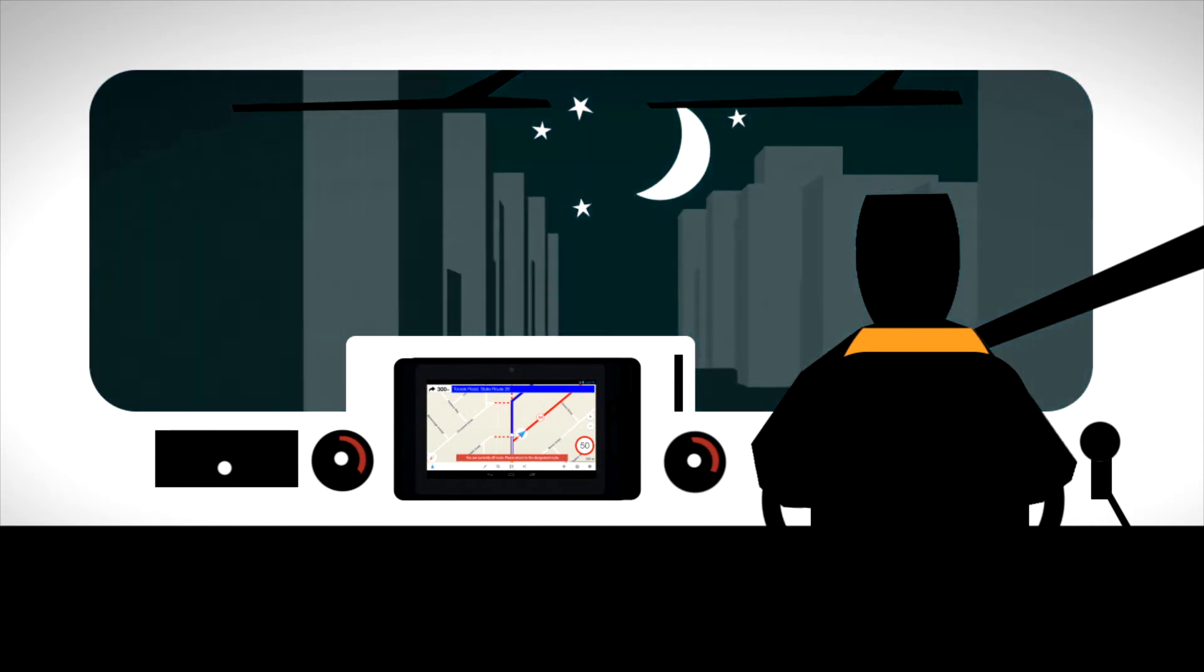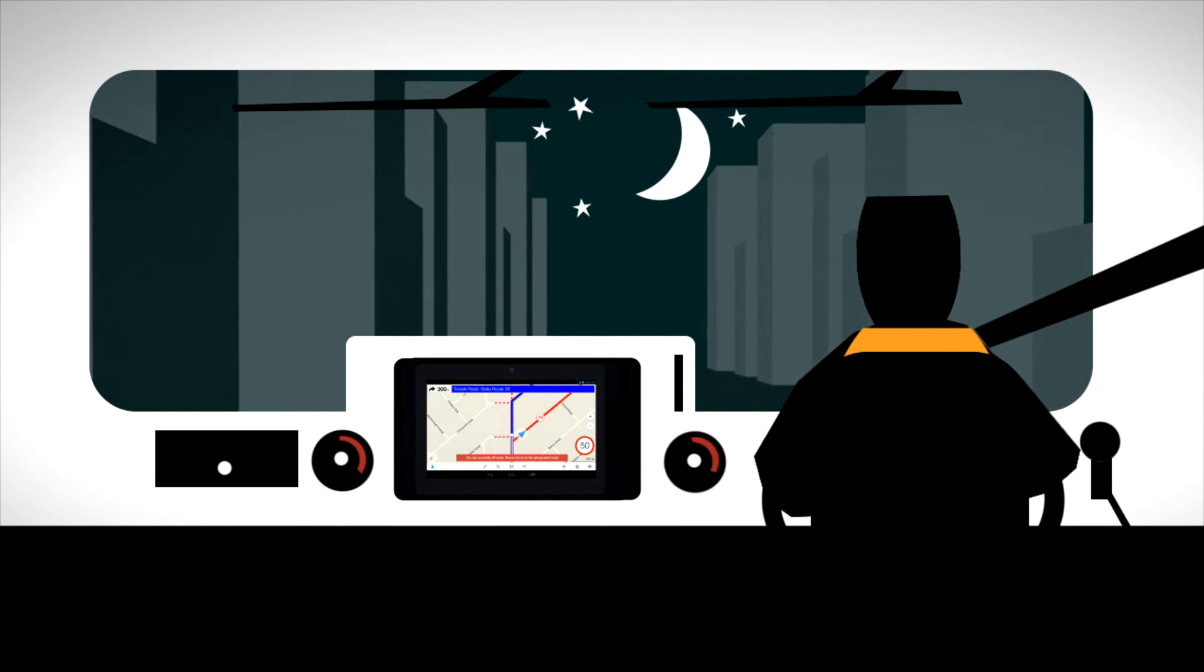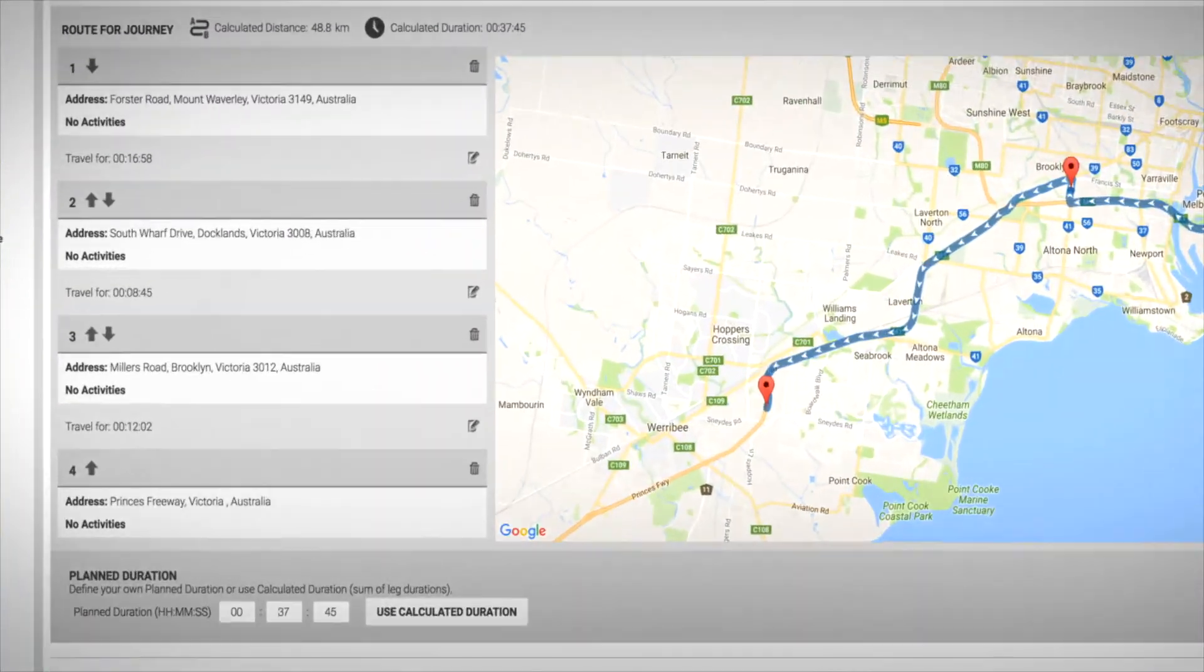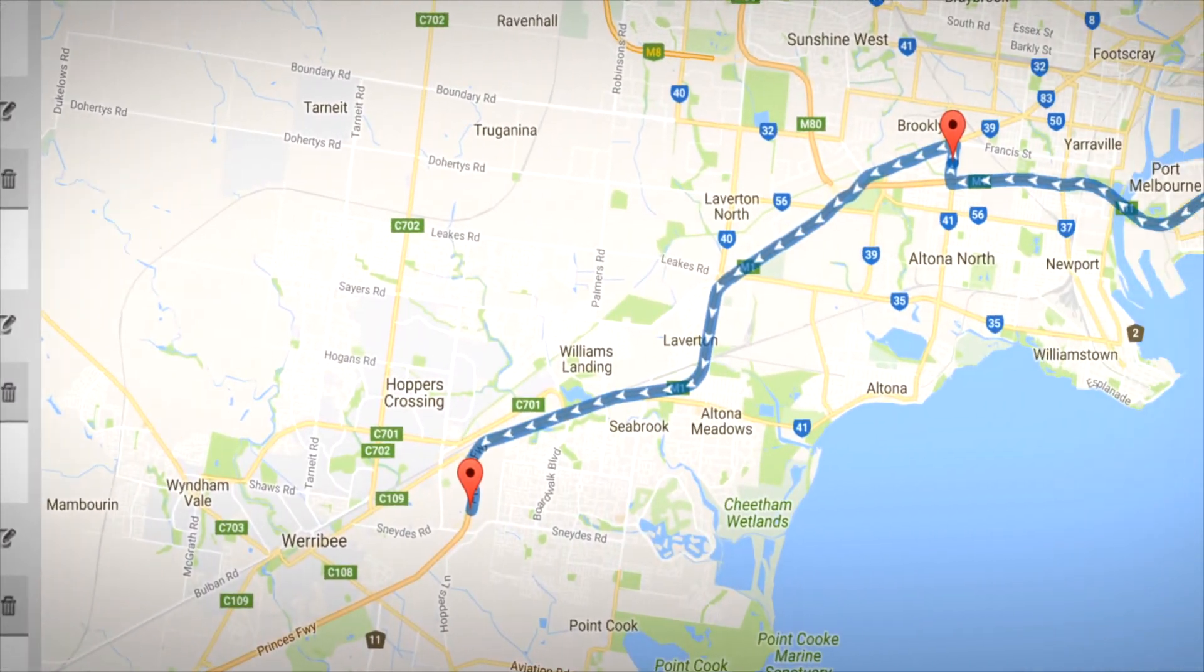SmartNav is developing to include other important infrastructure-based information, including driver fatigue and rest stops, and the ability to include your own map data to customise your network.